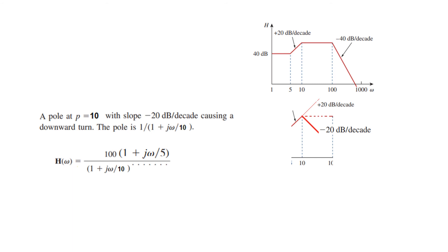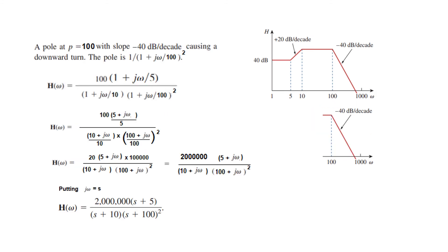For the third part: the upward slope must be countered by a negative slope to balance, so we need a pole at p=10. The line going down represents a pole, and using the formula, the denominator gets the term (1 + jω/10). The starting point is p=10, so we write 10 in the denominator.